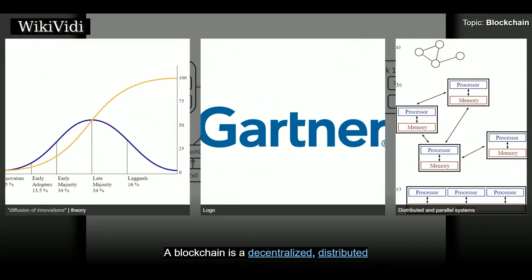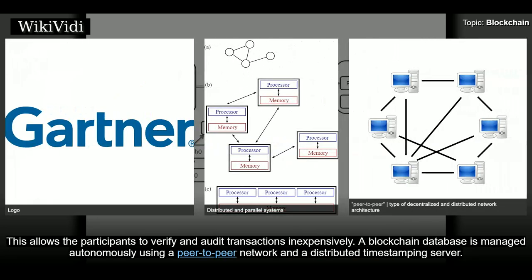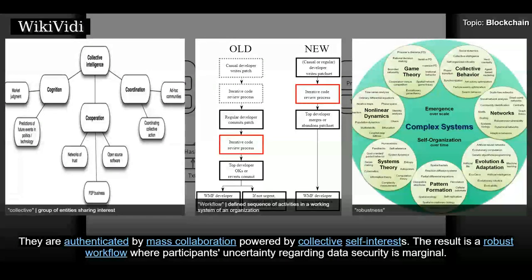A blockchain is a decentralized, distributed, and public digital ledger that is used to record transactions across many computers so that the record cannot be altered retroactively without the alteration of all subsequent blocks and the consensus of the network. This allows the participants to verify and audit transactions inexpensively. A blockchain database is managed autonomously using a peer-to-peer network and a distributed timestamping server. They are authenticated by mass collaboration powered by collective self-interests.